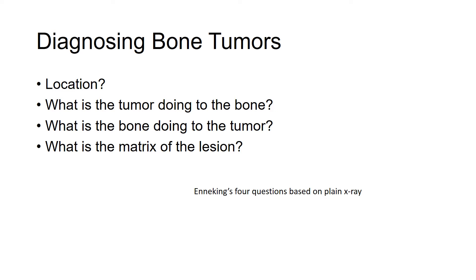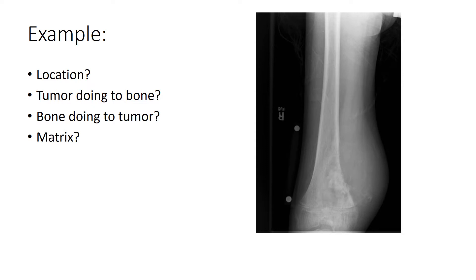When diagnosing bone tumors, four questions from Dr. Enneking are most helpful: What is the location? What is the tumor doing to the bone? What is the bone doing to the tumor? And what is the matrix of the lesion? If you see an x-ray and start asking these four questions, you can narrow things down significantly to arrive at the diagnosis.